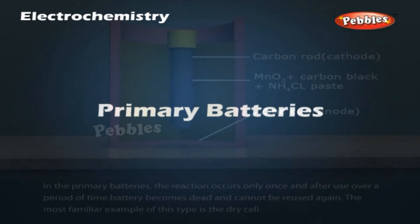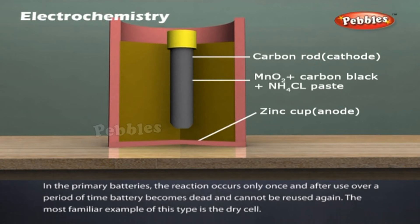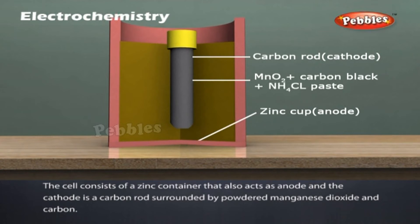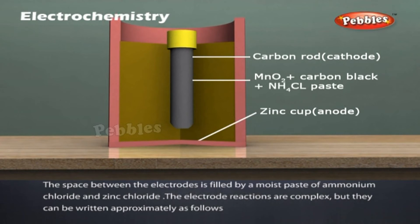Primary batteries. In the primary batteries, the reaction occurs only once and after use over a period of time, battery becomes dead and cannot be reused again. The most familiar example of this type is the dry cell. The cell consists of a zinc container that also acts as anode and the cathode is a carbon rod surrounded by powdered manganese dioxide and carbon. The space between the electrodes is filled by a moist paste of ammonium chloride and zinc chloride. The electrode reactions are complex but they can be written approximately as follows.